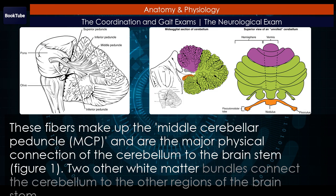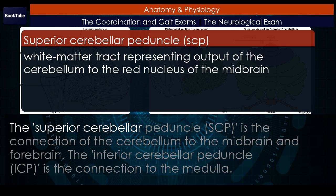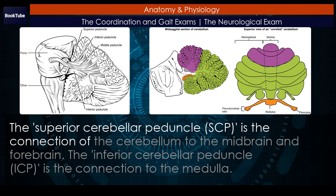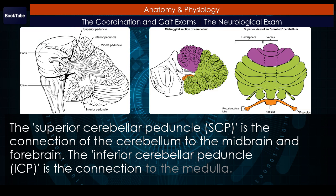Two other white matter bundles connect the cerebellum to other regions of the brainstem. The superior cerebellar peduncle (SCP) is the connection of the cerebellum to the midbrain and forebrain. The inferior cerebellar peduncle (ICP) is the connection to the medulla.